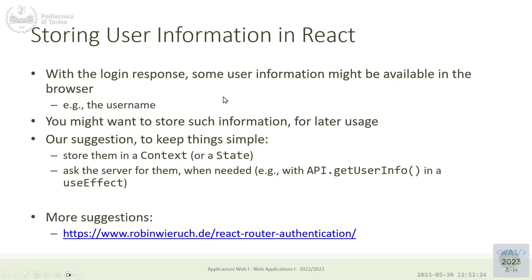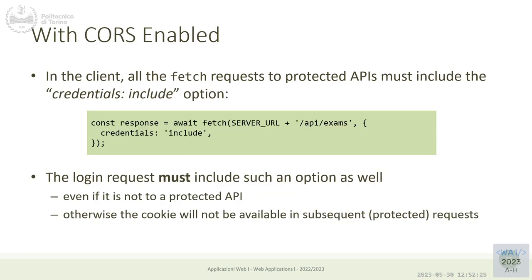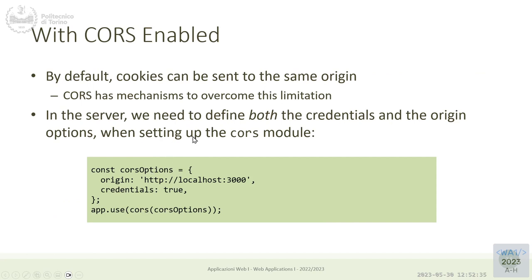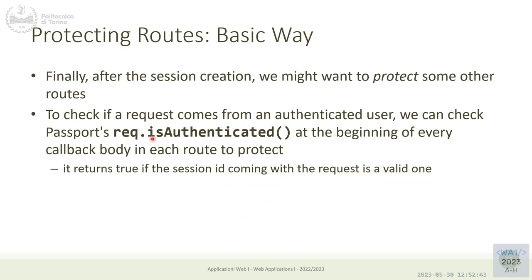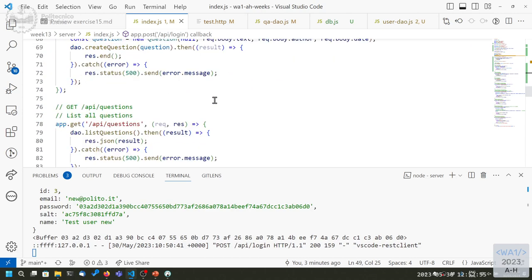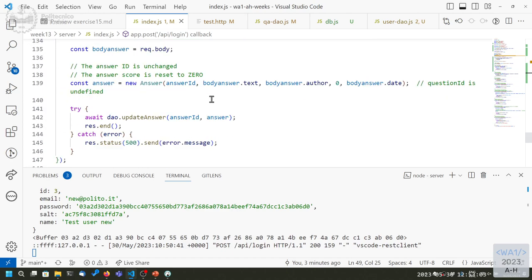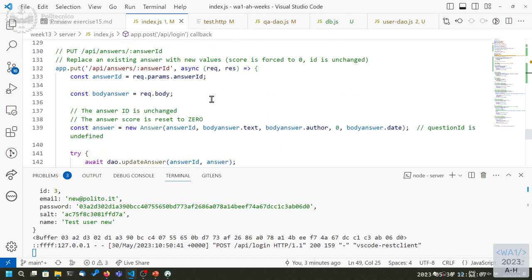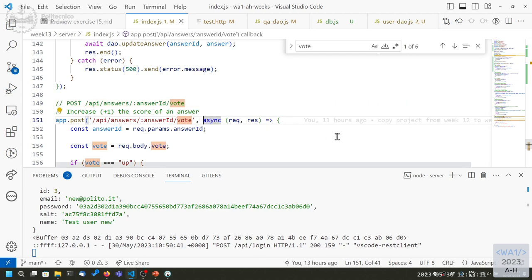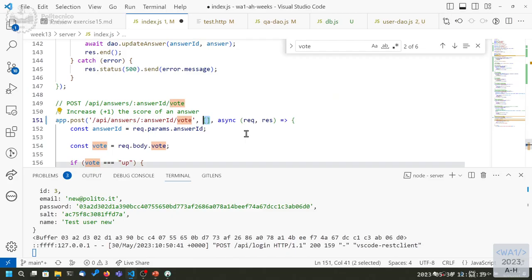We need to protect some APIs. We need to configure CORS options, but we don't need that from VS Code. We need to decide how to protect the rest of the APIs — we should add an isAuthenticated middleware at the beginning of the routes we want to protect.